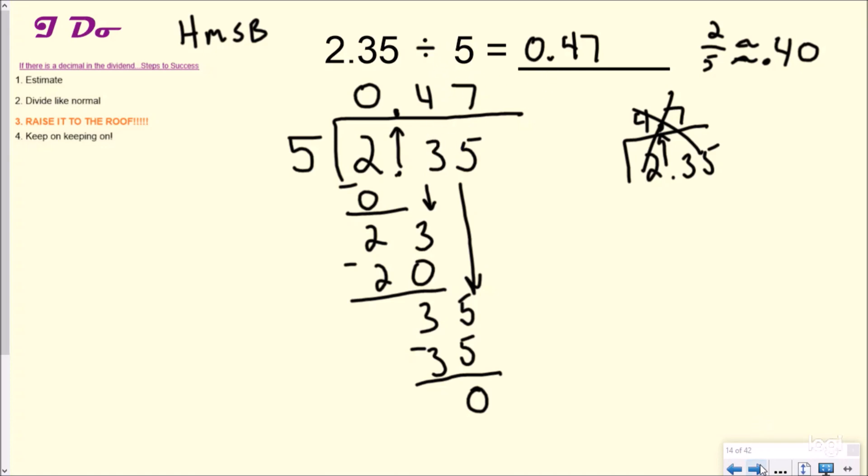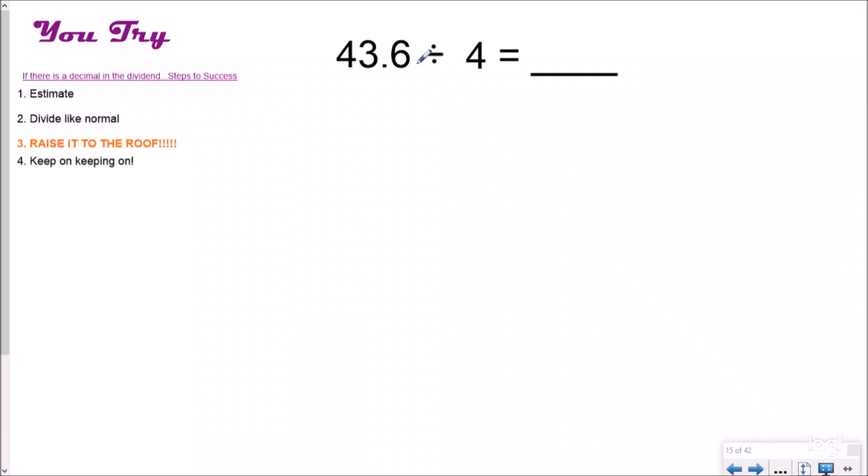Let's try another one. So go ahead and pause the video. You try this one, and then push play and I'll solve it and you can check your work as you went. Hopefully you just paused it and solved it. So let's go ahead and check this out. And so I have 43.6 divided by 4. If I round this to 40 in my head, I think my answer should be somewhere around 10, because 40 divided by 4 would be about 10.